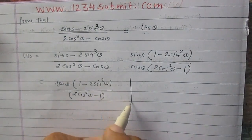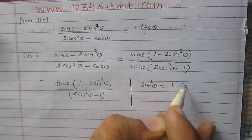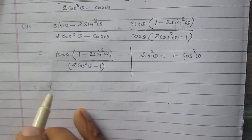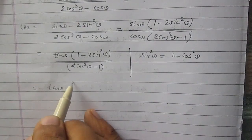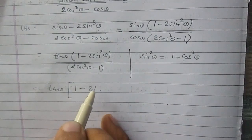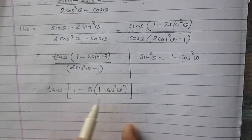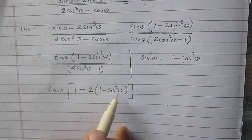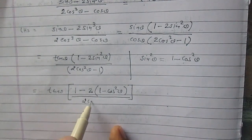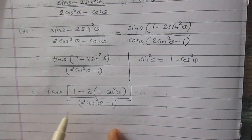Using the identity, sin square theta is 1 minus cos square theta. So we can write it as tan theta times 1 minus twice of sin square theta, and we are reducing sin square theta as 1 minus cos square theta. So it is 1 minus twice of 1 minus cos square theta. The denominator remains unchanged as 2 cos square theta minus 1.